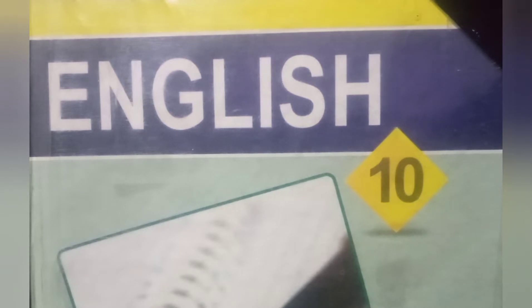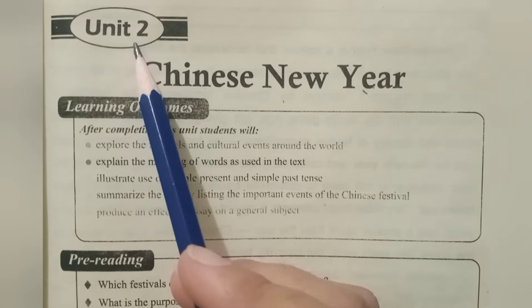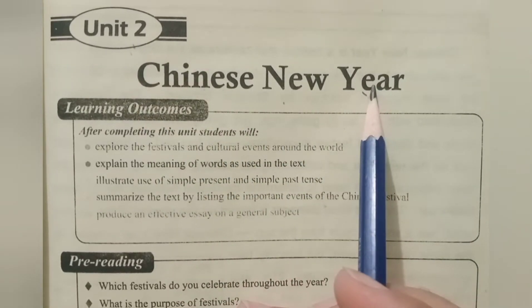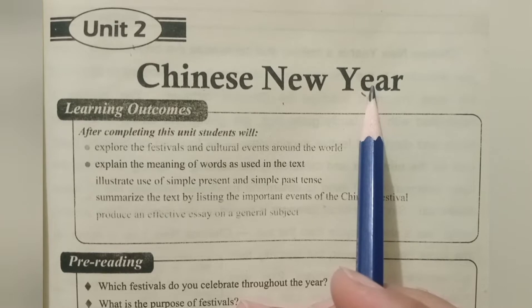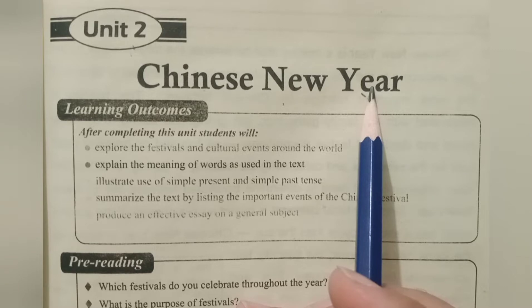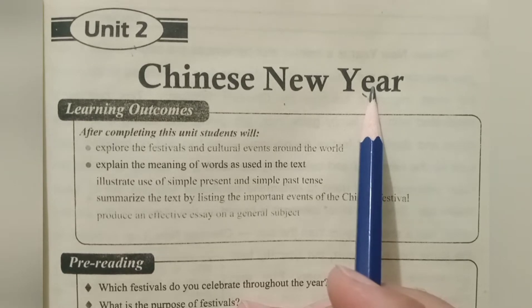Bismillahirrahmanirrahim. Dear students, assalamu alaikum. Hope you all are having a great time at home. Open your English book, Unit Number Two: Chinese New Year. You know that China is a neighboring country of Pakistan. In this lesson we will learn about some traditions associated with Chinese New Year.